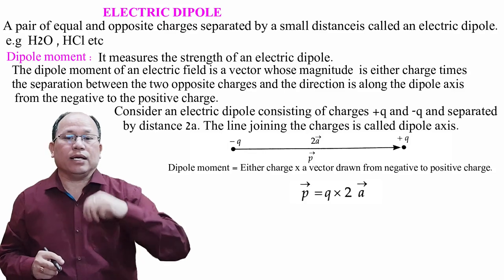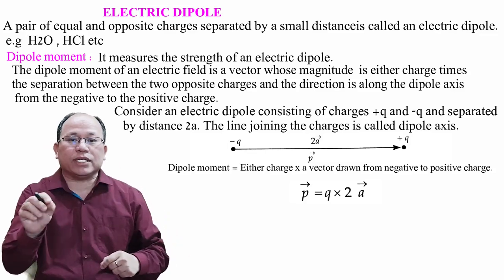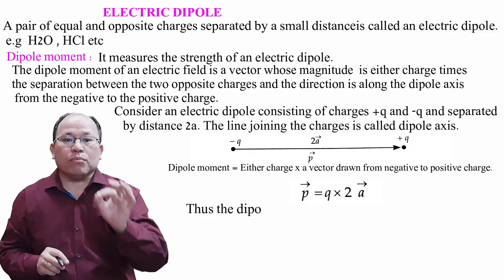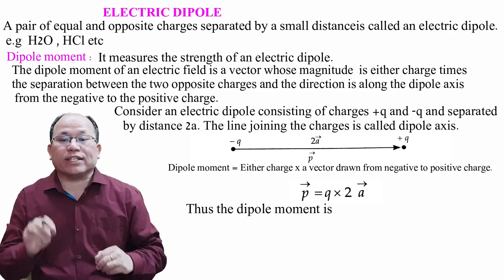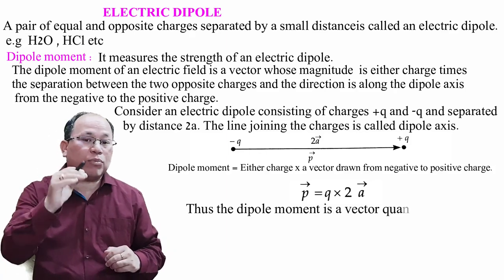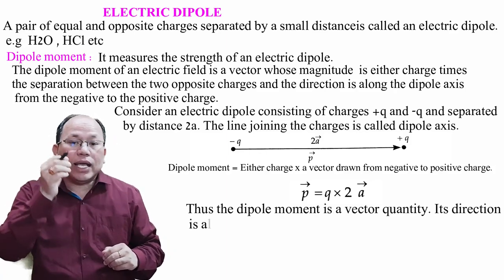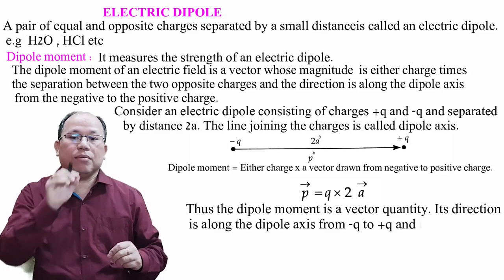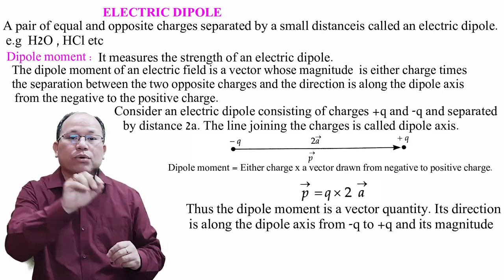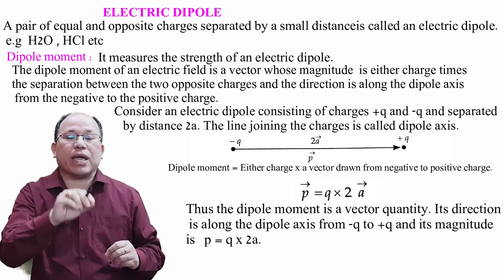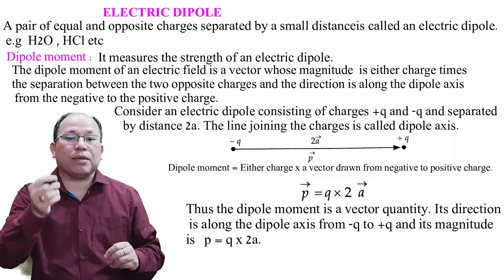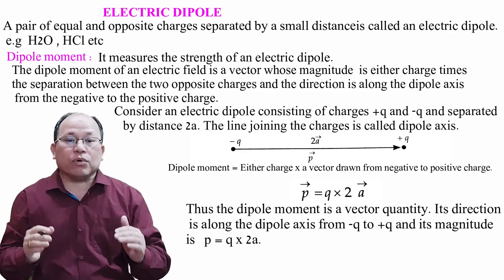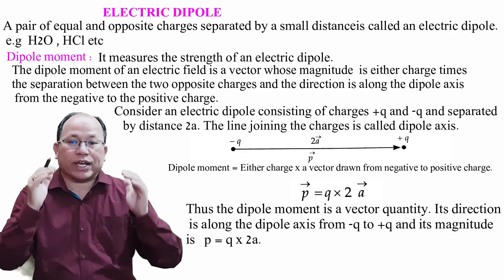The dipole moment symbol is p, where q is either charge and 2a is the separation. Thus the dipole moment is a vector quantity. Its direction is along the axis from −q to +q, and its magnitude is given by p = q × 2a.